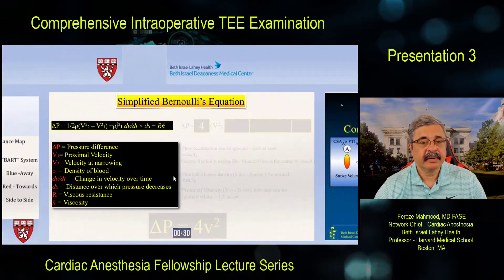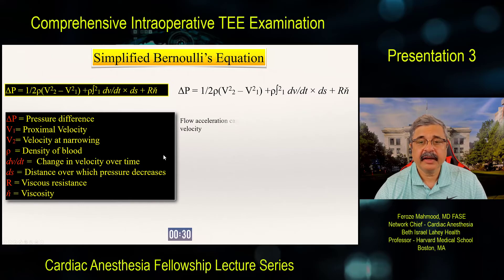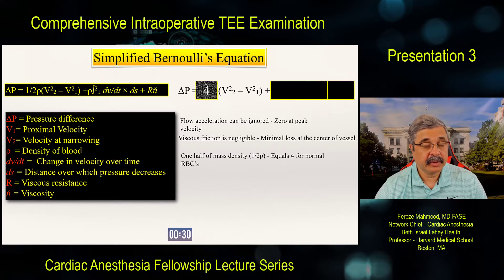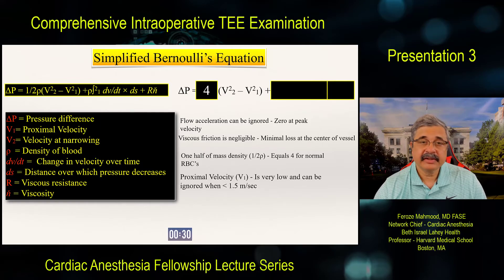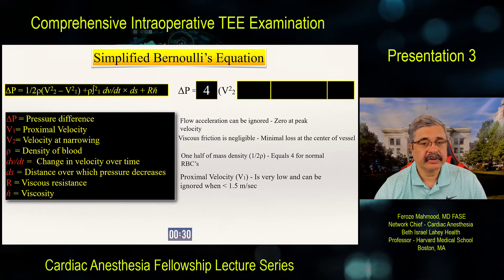We went over the simplified Bernoulli equation. Flow acceleration and viscous friction can be ignored. The red cell mass density constant is four. Proximal isovelocity can be ignored if it's less than 1.5 meters per second. The eventual simplified Bernoulli equation is: pressure equals 4V squared.